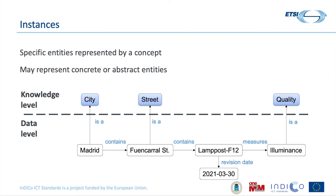Finally, we have the instances. These are the specific entities in the world that are represented by concepts. These entities may be concrete things in the world, such as a lamp post, or some abstract entities such as the quality of illuminance or the city of Madrid. The important part is that if I have the data but I don't have the knowledge, I won't be able to fully use or even correctly interpret the data. For example, unless I have an ontology such as the one we saw in the previous slides, I cannot infer only from the data that Madrid contains a lamp post, but if we have the ontology, since it is measuring some quality, we could infer that this is a sensor.